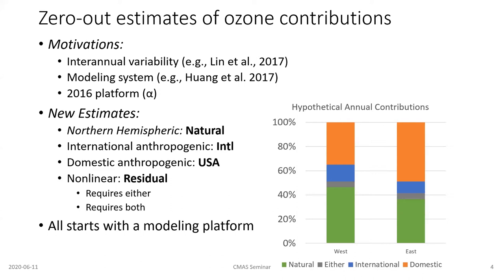When we do zero-out estimates of ozone, there's a little bit that can't quite add up perfectly. It either requires emissions from both controllable and non-controllable sources, or if you take away one, the other will make up the difference — so you have non-linearities producing ozone not directly attributable to either. On the right-hand side I'm showing hypothetical contributions: orange is the domestic USA component, blue is international, gray is the non-linear residual, and green is the natural. These colors will be consistent throughout the rest of the presentation.